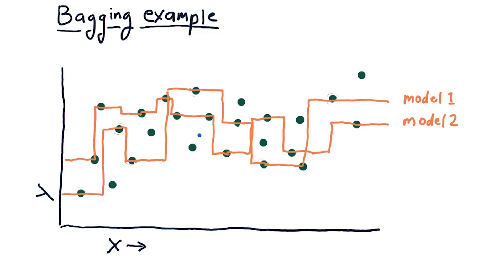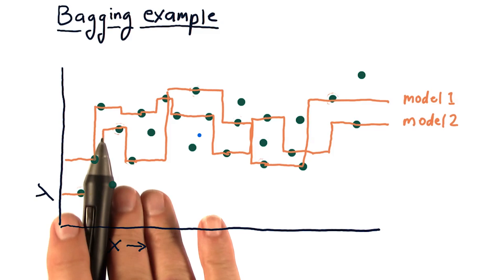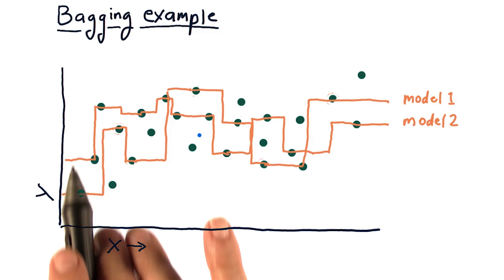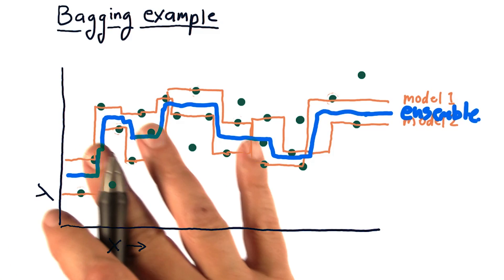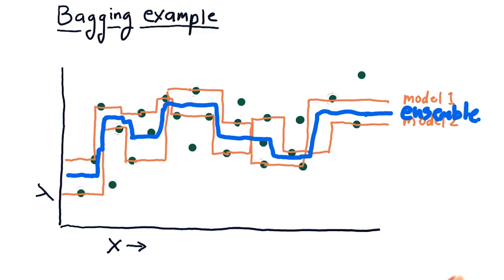But let's consider now an ensemble model where we combine the results of these two. And at each point where we query, remember what we do is we take the mean of the two models. So you can see already, as this blue curve is a bit more smooth than the individual models, we're beginning to get something better.